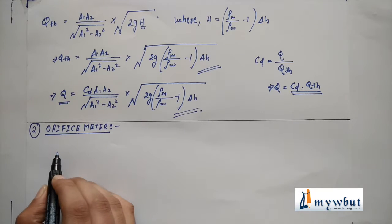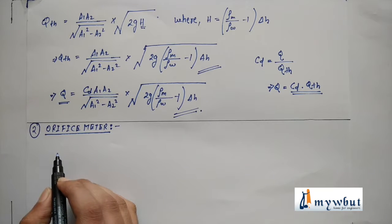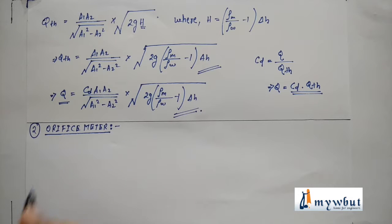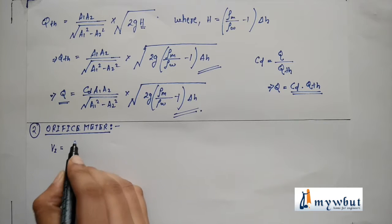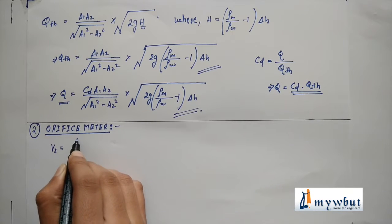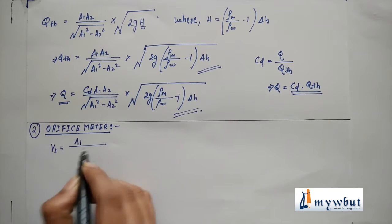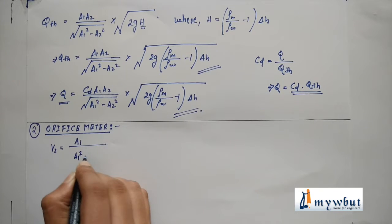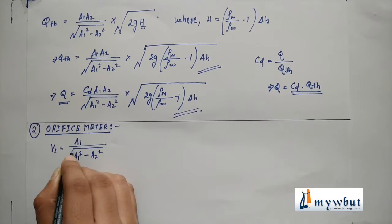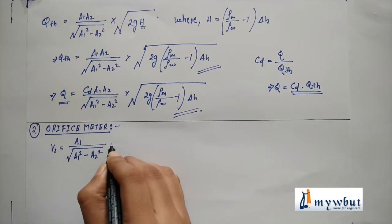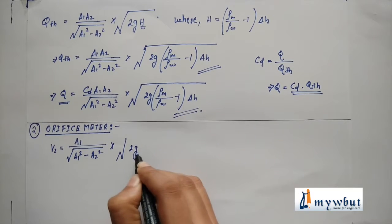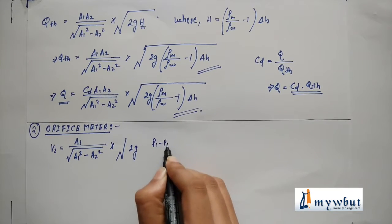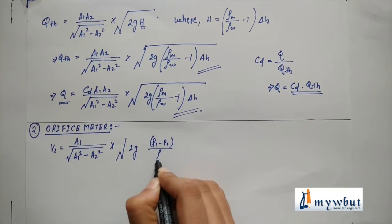Just the difference is that we were taking out the value for v₁ in the previous derivation, but now we will write the value for v₂ in this derivation. So the value of v₂ comes like a₁ by root over a₁ square minus a₂ square into root over 2g into (p₁ minus p₂) by ρg.